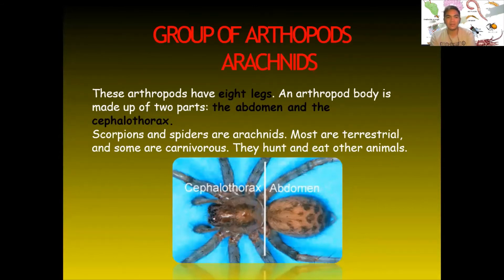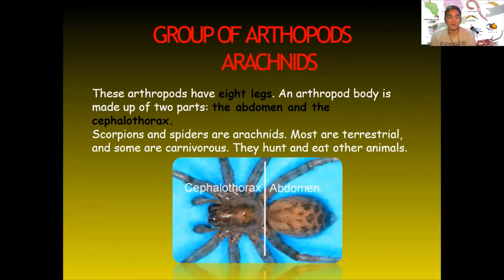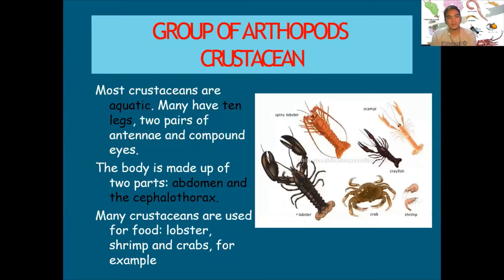Arachnids are arthropods with eight legs. Their body is made up of two parts: the abdomen and the cephalothorax. Examples of arachnids are scorpions and spiders. Most are terrestrial and some are carnivorous — they hunt and eat other animals.